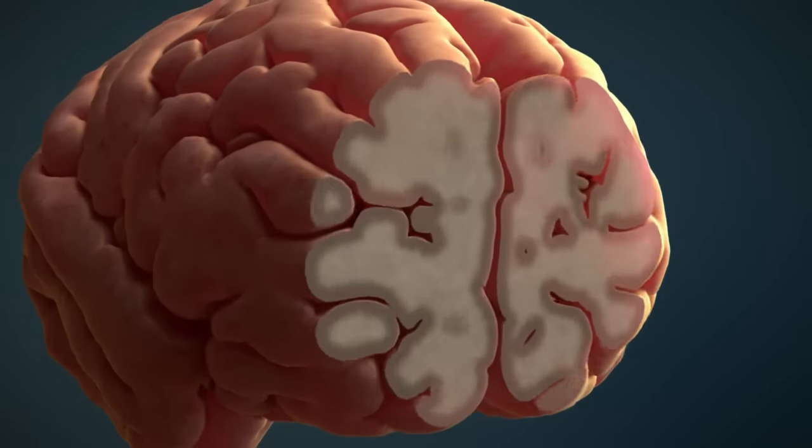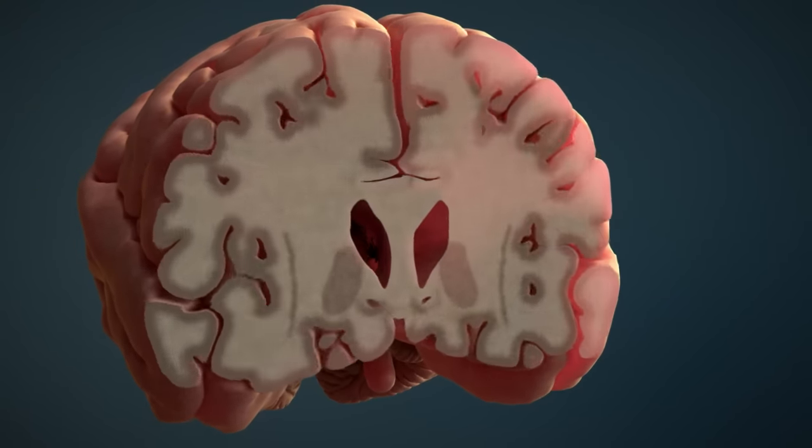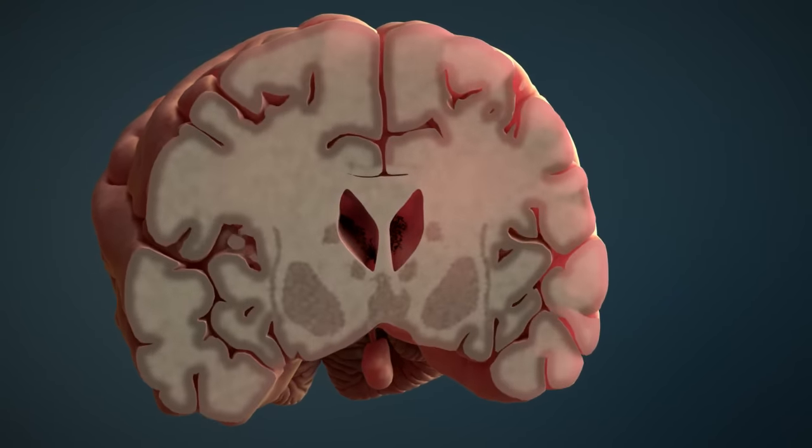The brain consists of nerve fibers, which can be recognized as white matter, and nerve cell bodies, which are referred to as gray matter.